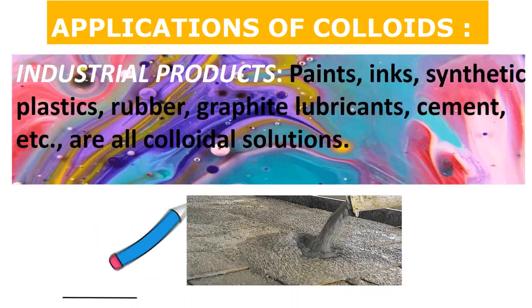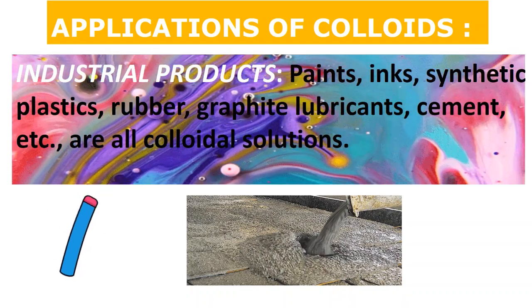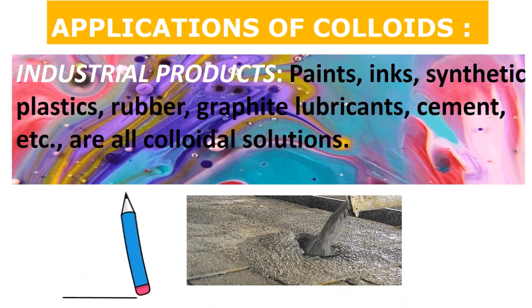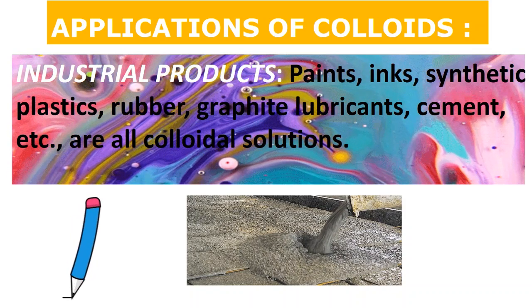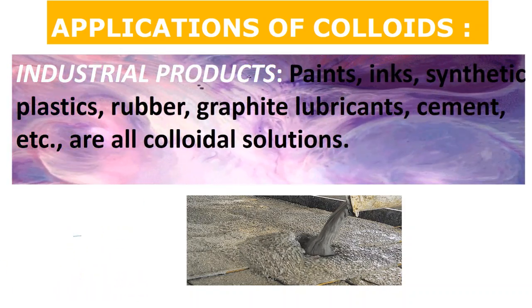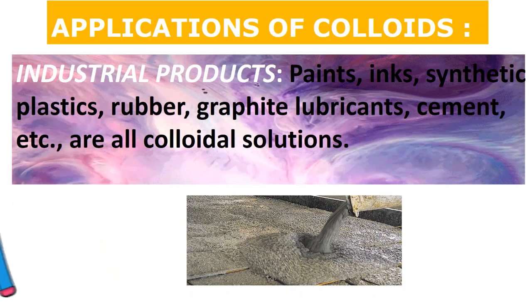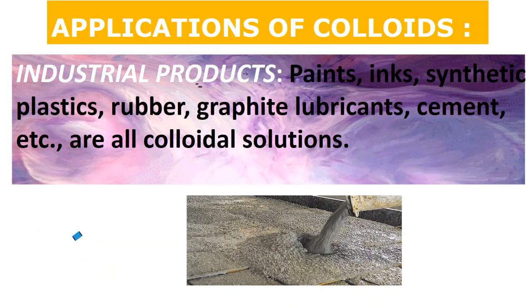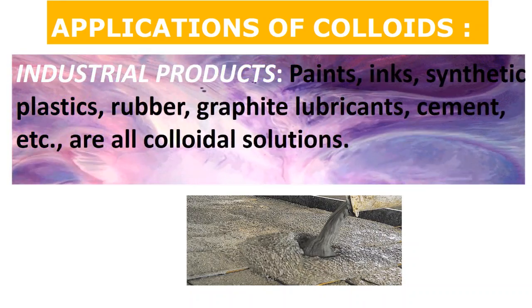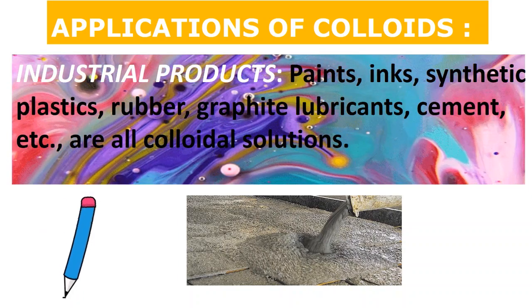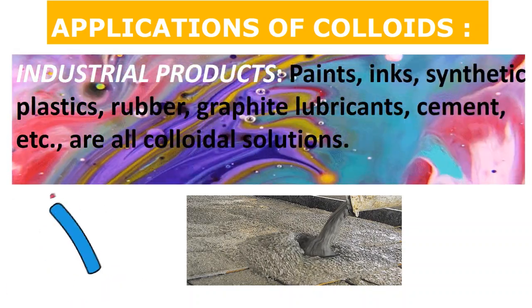Similarly, many industrial products such as paints, ink, synthetic plastics, rubber, graphite, lubricants, and cement are all colloidal solutions. Look around you — almost everything is a colloid. That is why this chapter is the most important and dearest to students.